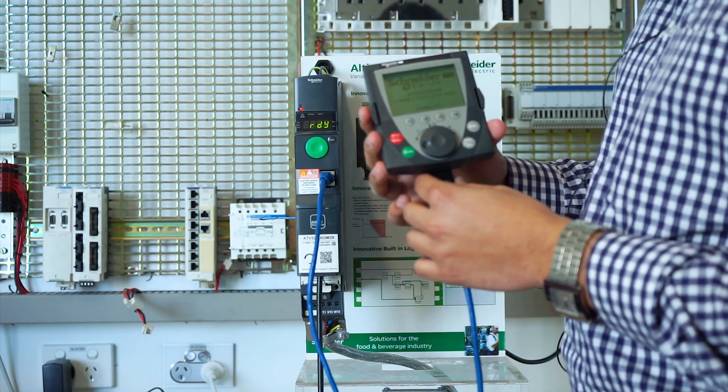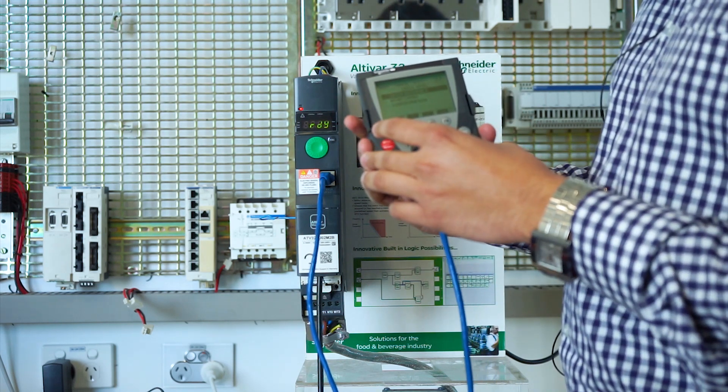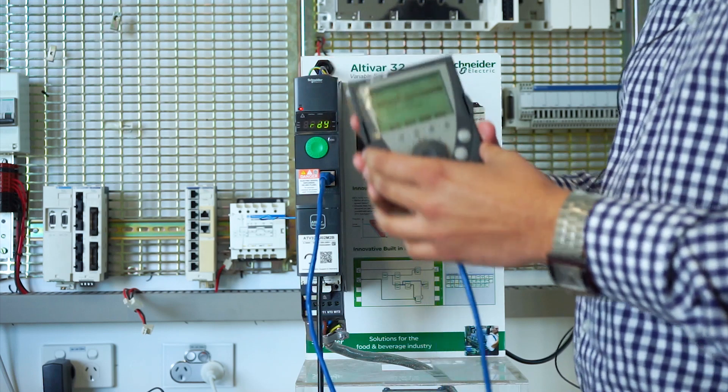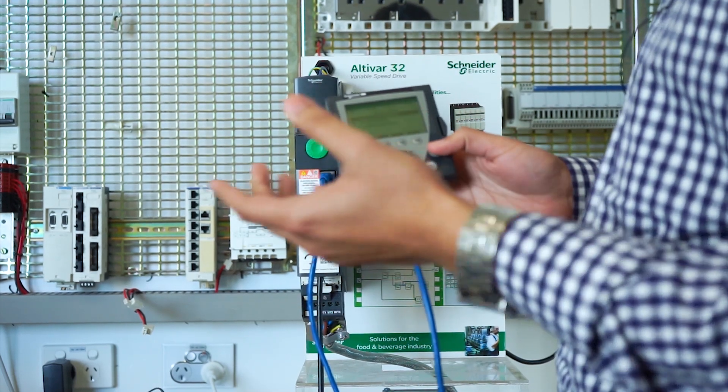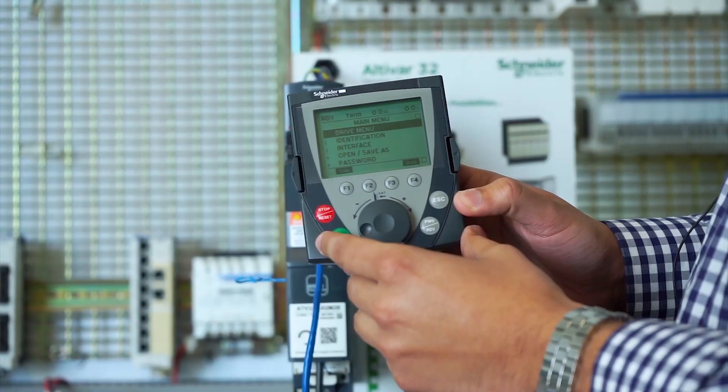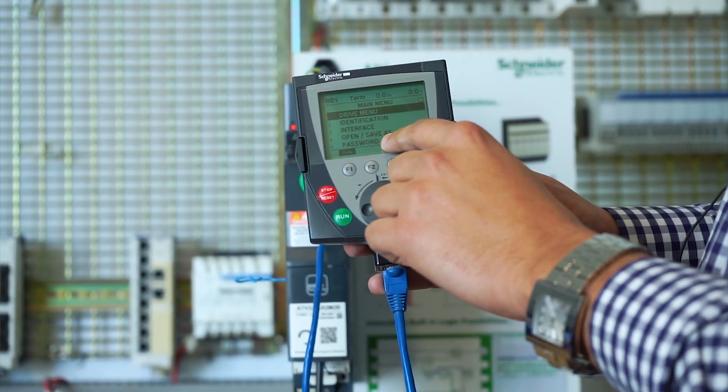You can see that I can get the display of the drive on the HMI itself. Now to save the parameters of the drive, we need to go to the main menu. Here you can see the options of the main menu.